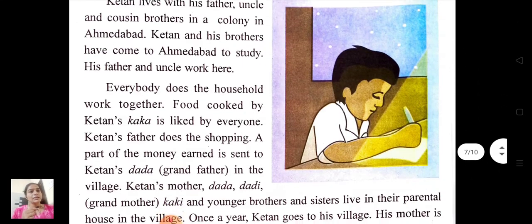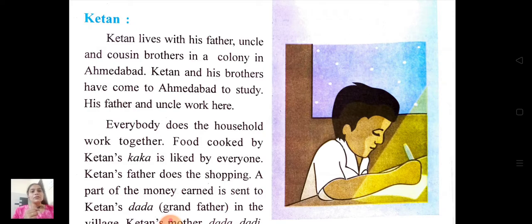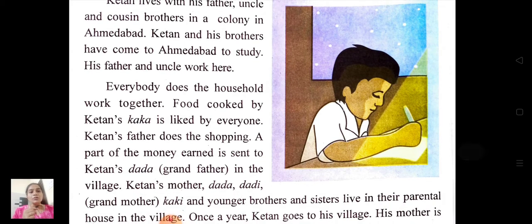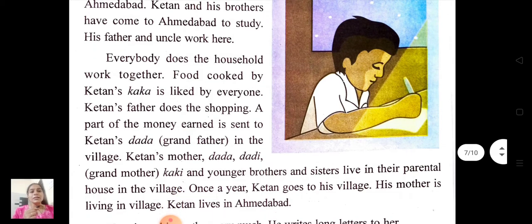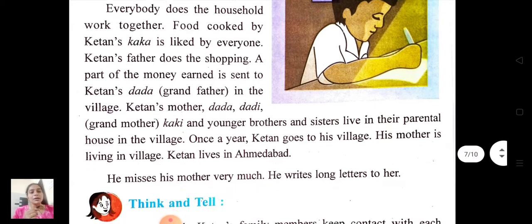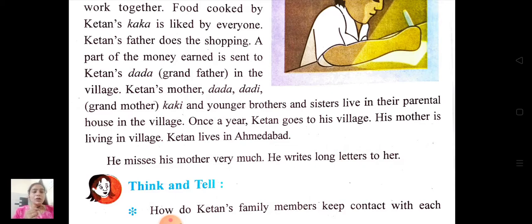Now the next — here is the paragraph about Ketan's family. Ketan lives with his father, uncle and cousin brother in a colony in Ahmedabad. Ketan and his brother have come to Ahmedabad to study. His father and uncle work here. Everybody does the household work together. Food cooked by Ketan's kaka is liked by everyone. Ketan's father does the shopping, and part of the money is sent to Ketan's dada grandfather in the village. Ketan's mother, dada-dadi grandmother, kaki and younger brothers and sisters live in their parental house in the village. Once a year, Ketan goes to his village. He misses his mother very much and writes long letters to her.